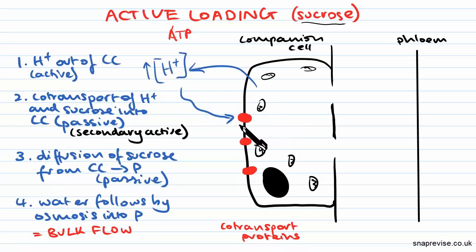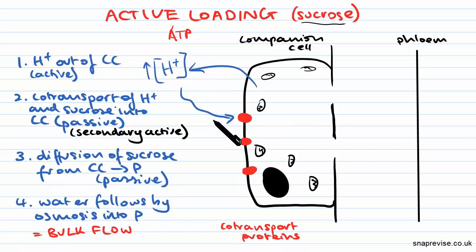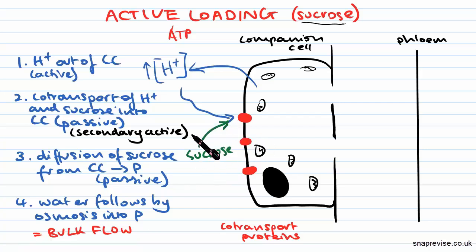These special proteins are co-transporters. They will only allow hydrogen ions back into the cell if they are combined with another molecule, and these co-transporters specifically look for sucrose. So hydrogen ions will only come back in if there is sucrose present.